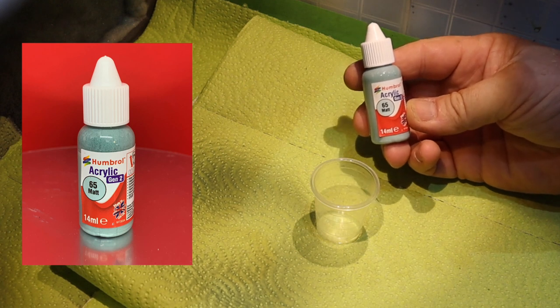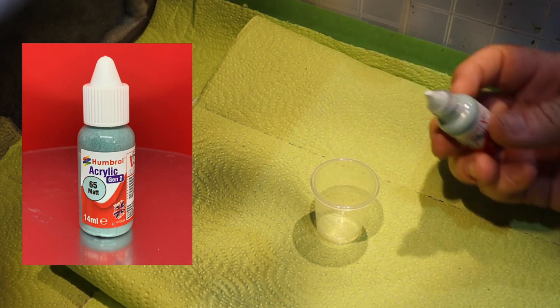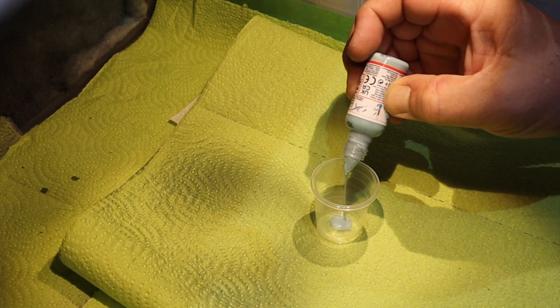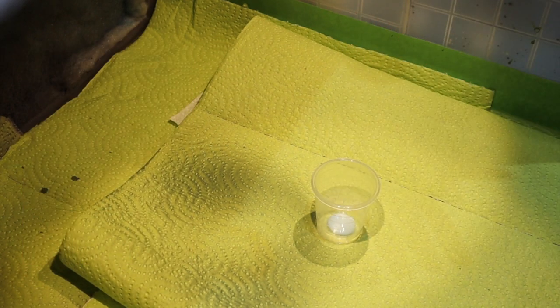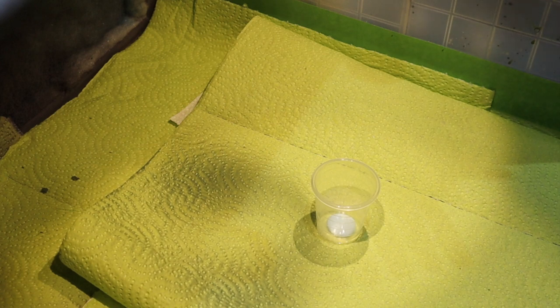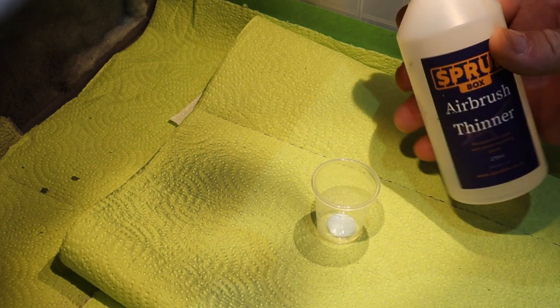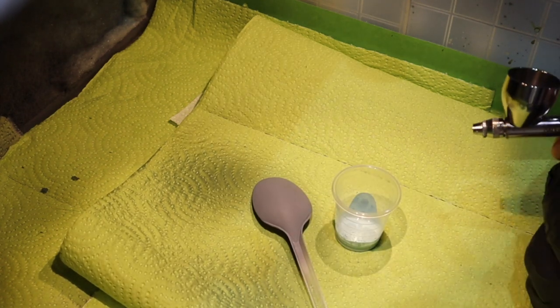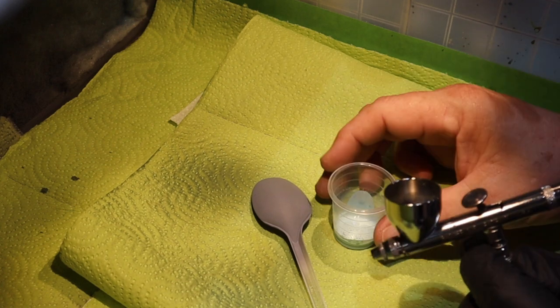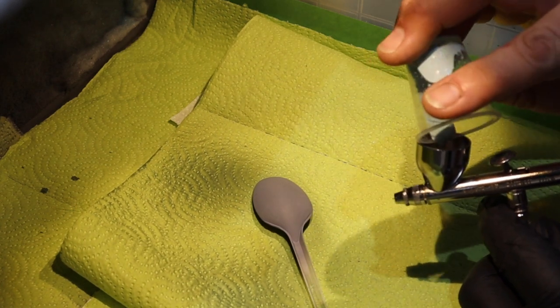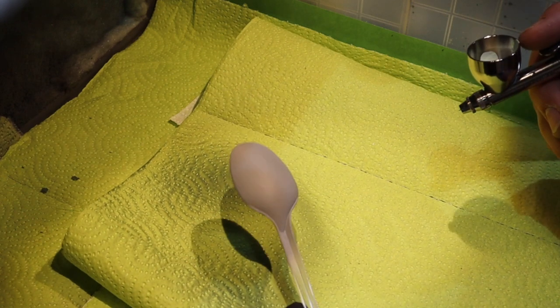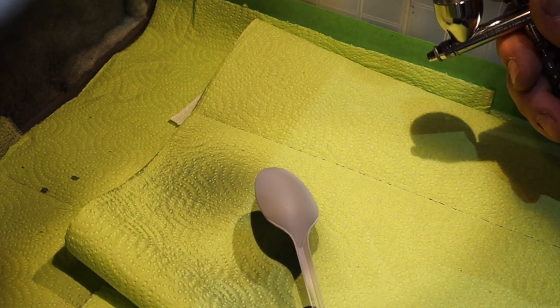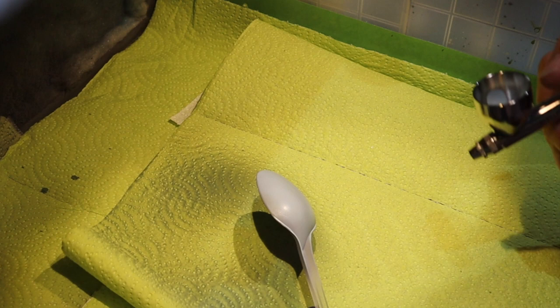Onto our next colour, which is the acrylic 65 matte of the Gen 2 range. Again, I'm going to use the same thinner throughout the process, which is the Spruebox airbrush thinner. This is a product I use, so I'm quite confident with it. Just a few drops, just to give us a little bit more of a flow to the paint. Again, pour it into the airbrush. And then what we're going to do is, as we've done before, just start off with a nice light coat over the spoon and then we'll build the colour up from there.